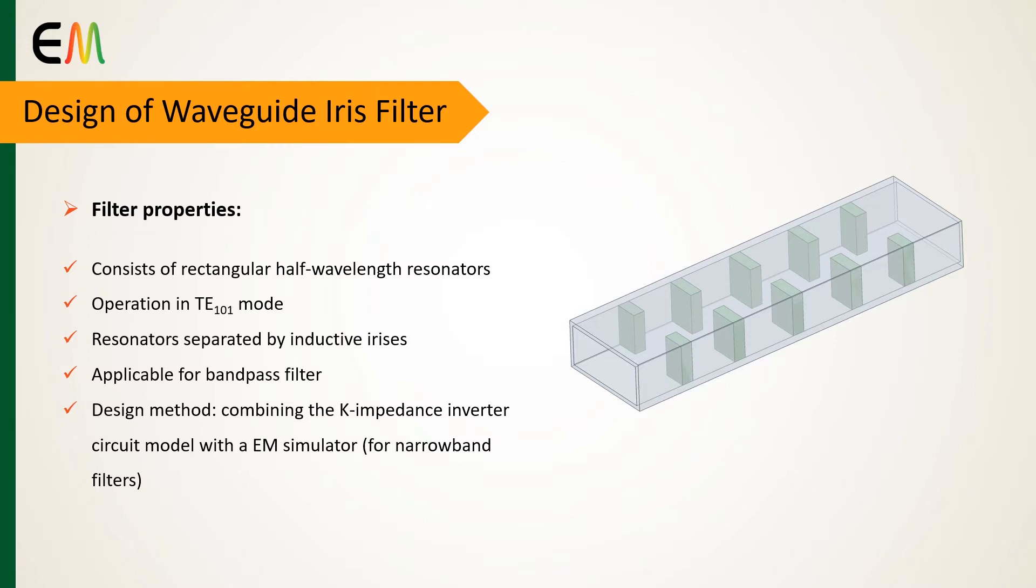The waveguide iris filter can be applied as a bandpass filter. In this video I will explain the design method of combining K impedance inverter circuit model with an electromagnetic simulator that is applicable for narrowband filters.